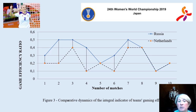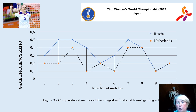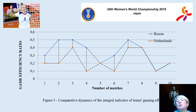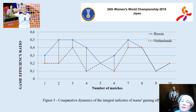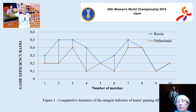During the first four matches, the Russian team had a higher indicator level. At the end of the group stage, both Russia and Netherlands had the same indicator. After that, Russian team and Netherlands indicators went up, and the Russian team had more advantage in this indicator. Then both teams demonstrated absolutely the same indicator.